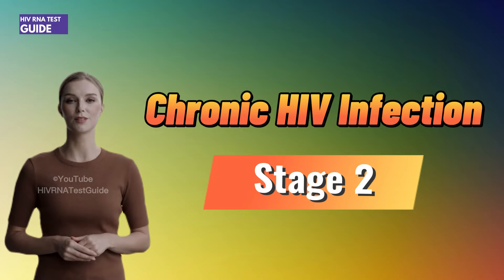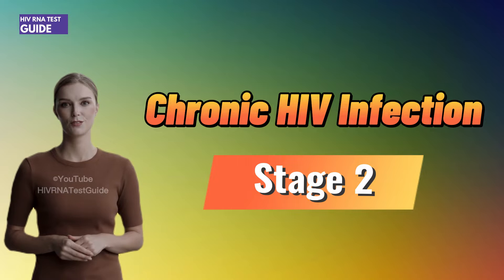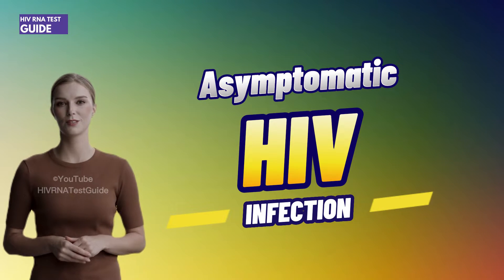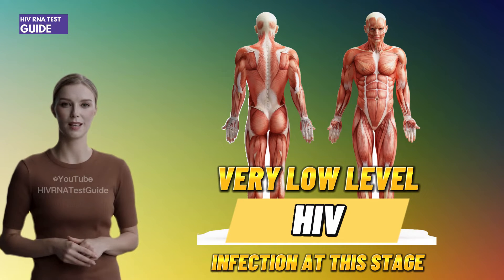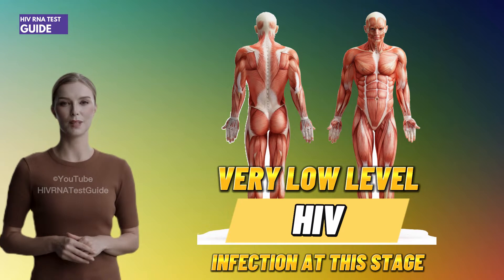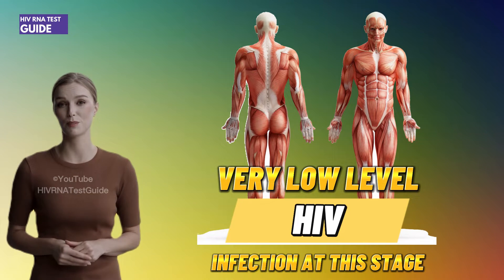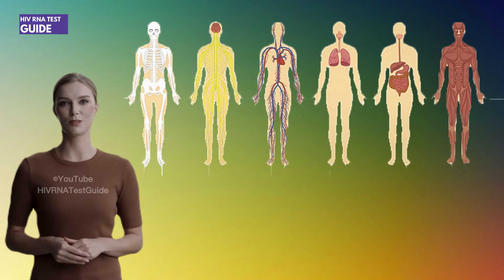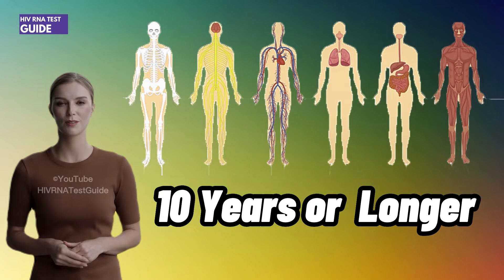The second stage of HIV infection is chronic HIV infection, also called asymptomatic HIV infection. During this stage, HIV continues to multiply in the body but at very low levels. People with chronic HIV infection may not have any HIV-related symptoms. Without antiretroviral therapy, chronic HIV infection usually advances to AIDS in 10 years or longer, though in some people it may advance faster.